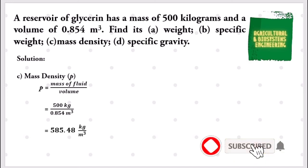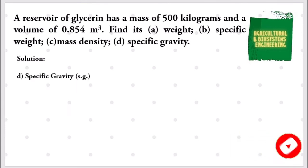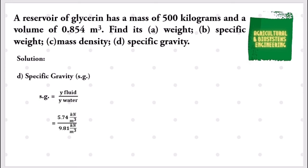Finally, we solve for the value of our specific gravity. To solve for its value, we divide the specific weight of the fluid — which we already solved — by the specific weight of water. The specific weight of water is 9.81 kilonewtons per cubic meter, which is a constant value. We substitute: 5.74 kilonewtons per cubic meter divided by 9.81 kilonewtons per cubic meter. The final answer for our specific gravity is 0.59.